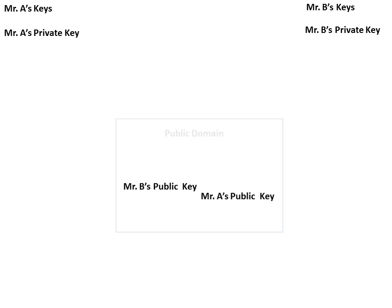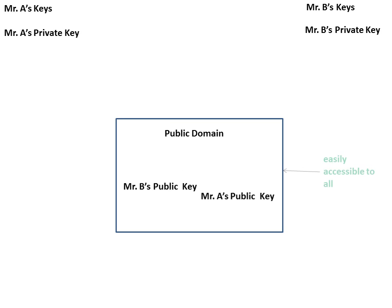Now let us understand who has access to asymmetric keys. For example, Mr. A and Mr. B are each having a private key as well as a public key. Their public key will be available in the public domain, so it is accessible to all. But their private key will be accessible only to the respective owners. This is a very important concept.